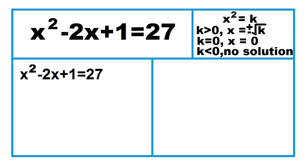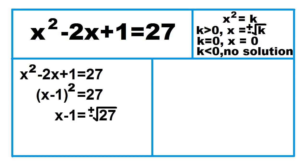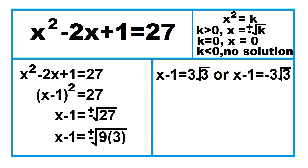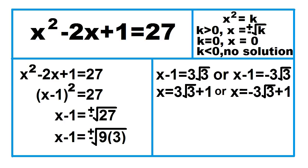Another example. Write in the form x squared equals k. The expression on the left side of the equation is a perfect square trinomial, which can be written in the form of a square of a binomial. Next, apply the square root property. 27 is not a perfect square, but we can factor it: 27 is equal to 9 times 3. Separate the plus or minus into two equations and simplify each individually. The answer is x equals 3 times the square root of 3 plus 1, or x equals negative 3 times the square root of 3 plus 1.